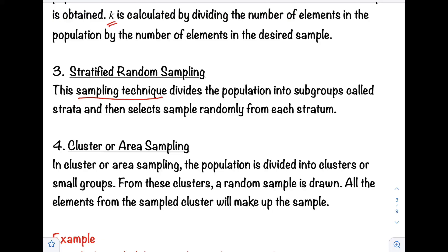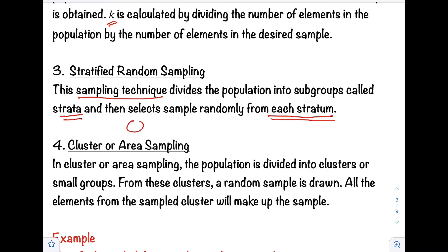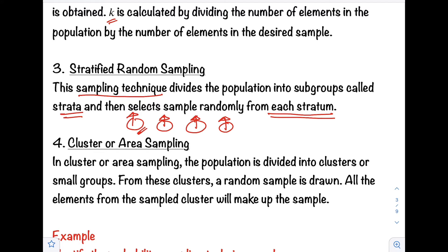Number three is Stratified Random Sampling. This technique divides the population into subgroups called strata, then selects a sample randomly from each stratum. For example, if you divide a population into four groups, you take a sample from each group. The sample size per group is proportional — the more members a group has, the larger the sample taken from it, and vice versa.